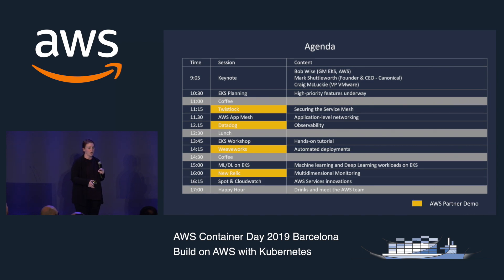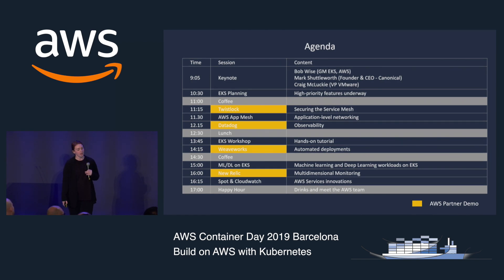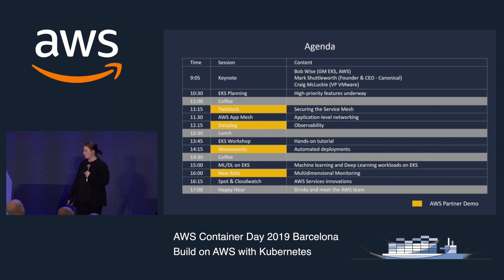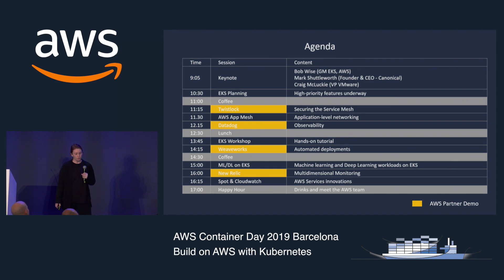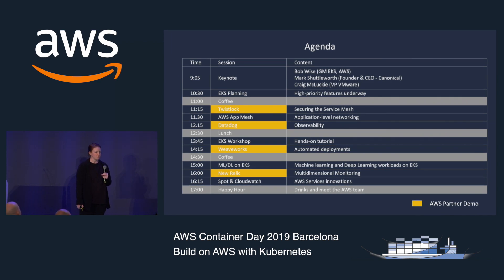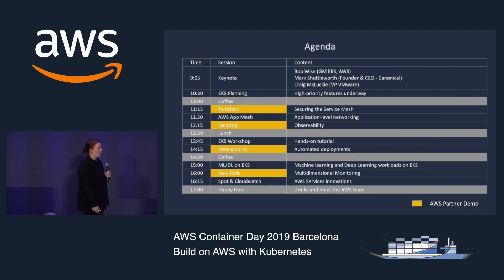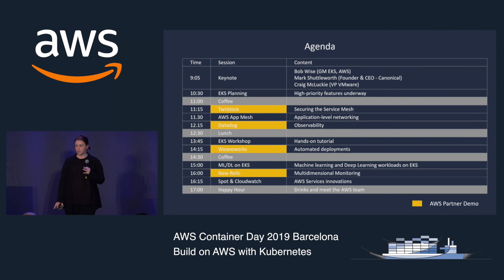EKS planning — we're going to be talking about the roadmap with Nathan Tabor. We'll break for coffee. We have some partner sessions coming up after that. We have lunch. We have an EKS tutorial after that, which is a hands-on workshop talking about automated deployments with Weaveworks. We will be celebrating a little bit of EKS's birthday a little bit early. We have some more sessions after that.